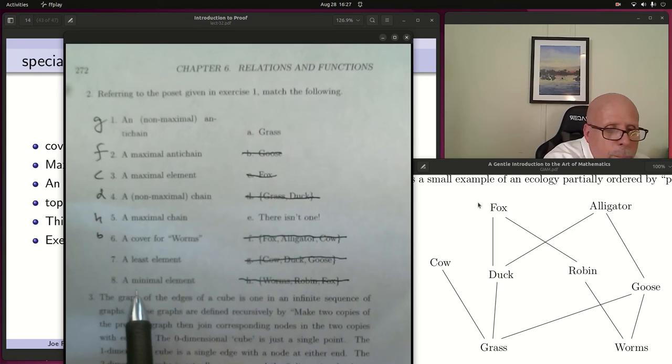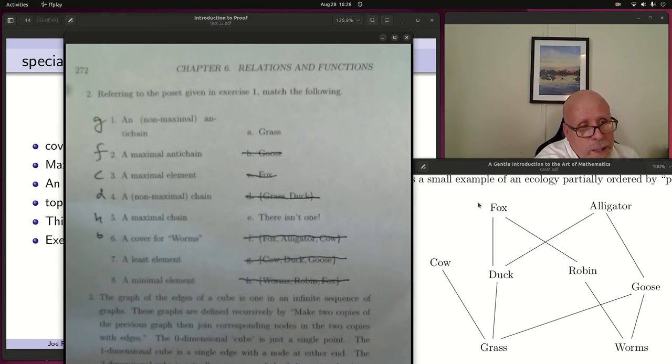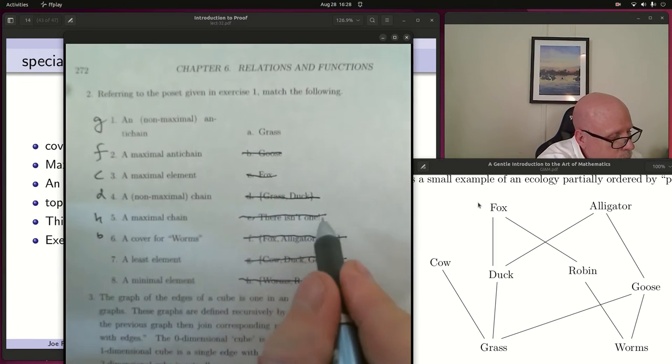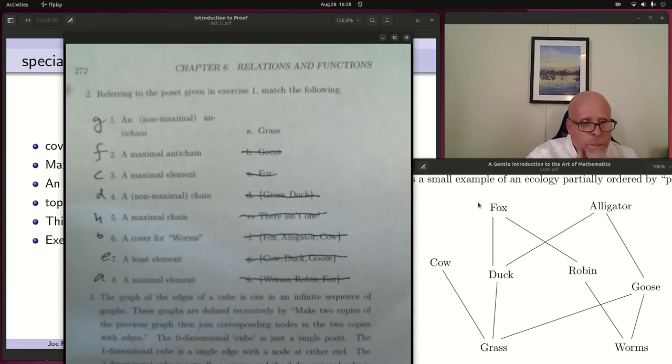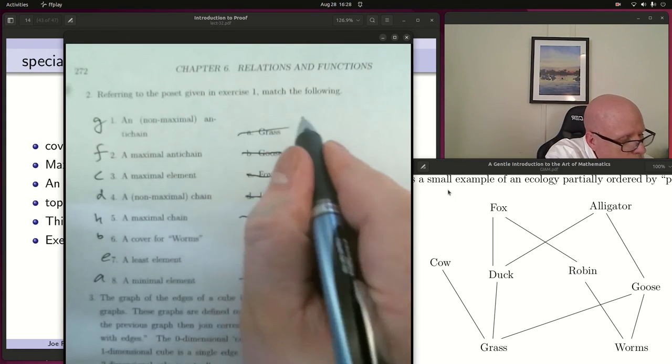A least element and a minimal element are our remaining choices. What's the difference? A least element is a synonym for a bottom. It's like the absolute minimum in a calculus situation. It's the unique smallest thing. And there isn't one. That's one of the options. There isn't a least element. And so that must mean that A is a minimal element. Sure, it is grass. It's down there at the bottom. But there's also worms as a minimal element.